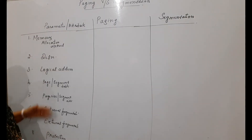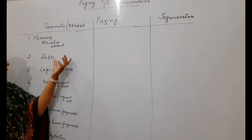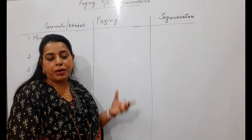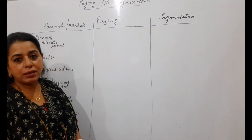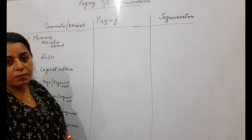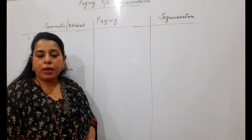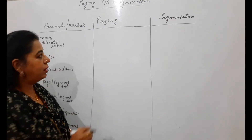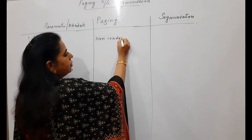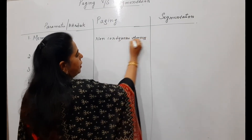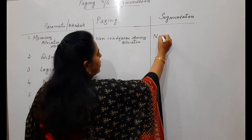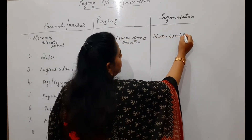I have written the parameter, and on this particular parameter or attribute, let us see whether it is supported or not supported by these two concepts — paging and segmentation. The very first parameter is the memory allocation method. Is it contiguous or non-contiguous? Paging is a non-contiguous memory allocation method, and segmentation is also non-contiguous.